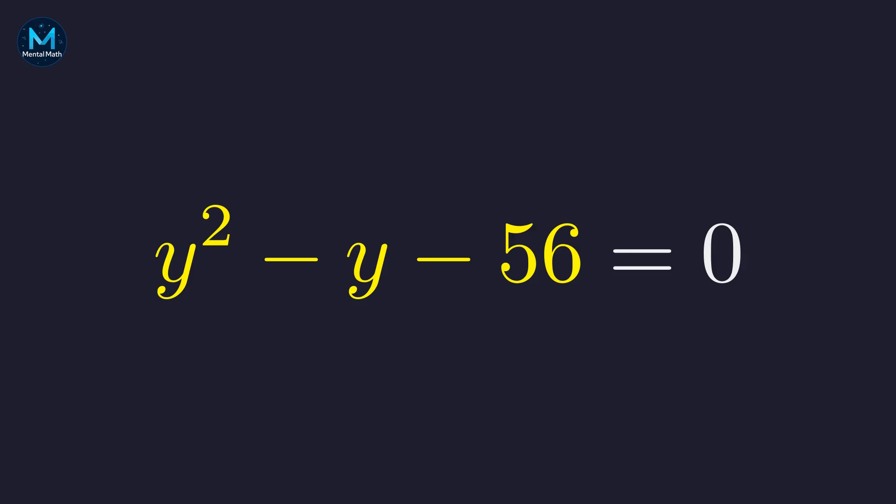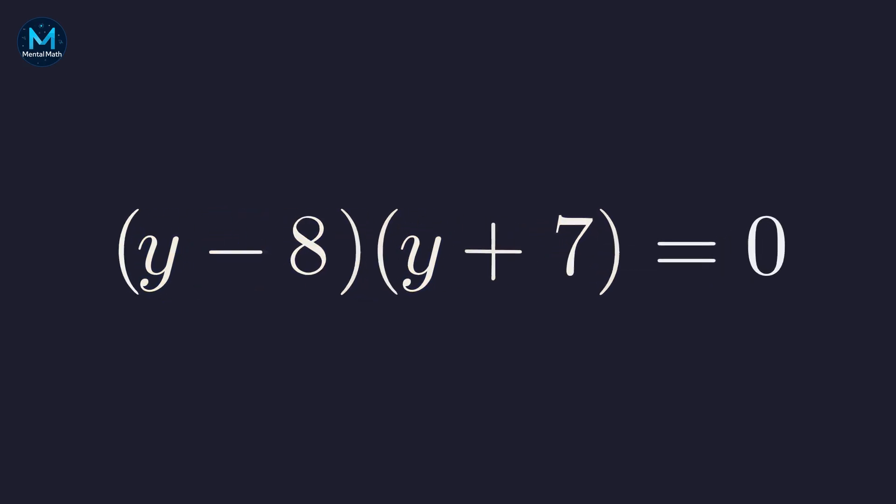To factor this, we need two numbers that multiply to negative 56 and add to negative 1. Those numbers are negative 8 and positive 7. So we get y minus 8 times y plus 7 equals 0.